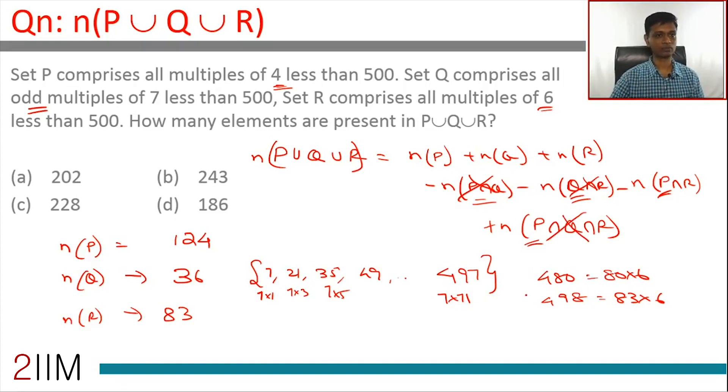So the only common set that we need to think about is P∩R. Set of all elements present in P and R: multiples of 4 and multiples of 6, effectively multiples of 12.